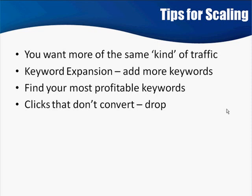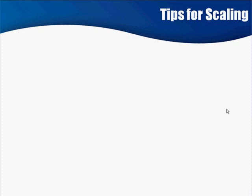Clicks that don't convert — drop them. If somebody types in a keyword you're bidding on but nobody ever buys when they use that keyword, drop it. I've looked at campaigns and wondered why nobody ever buys from a certain keyword when it's so similar to another keyword that's performing really well. It's psychological or something — people searching for particular keyword phrases just don't end up purchasing. We don't have to figure it out. Just log into your campaign, see this keyword has sent 500 clicks and nobody ever converted, and drop it. No point in bidding on that and paying all that money for no reason.